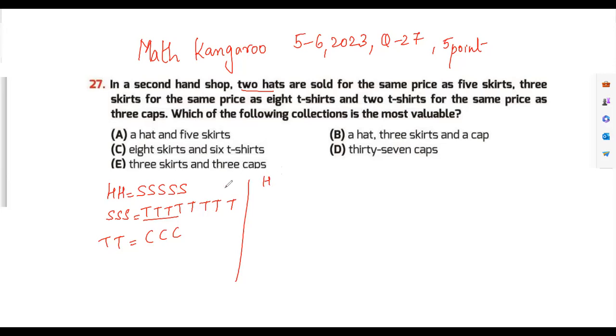Hats are 10, so 10 plus 10 is 20, and you have five skirts. So the hat is 10, and then this was 20, and there are five skirts. So you do 20 by 5, so each skirt is a 4. And then you have three skirts, so three skirts is 12.